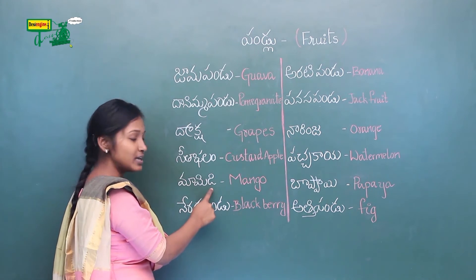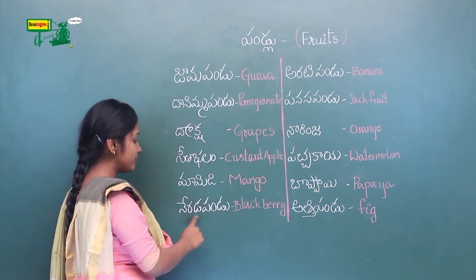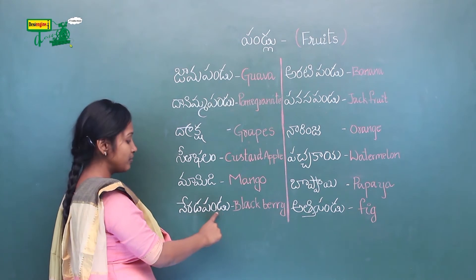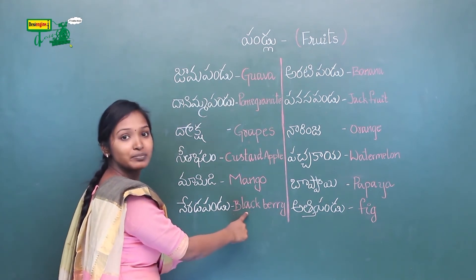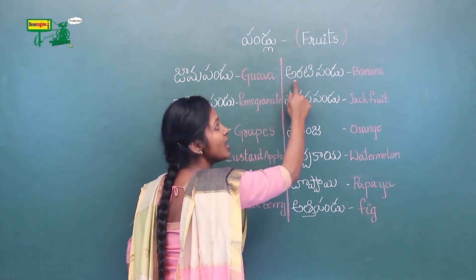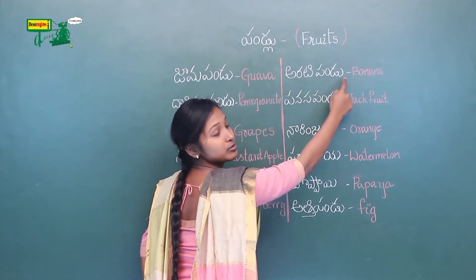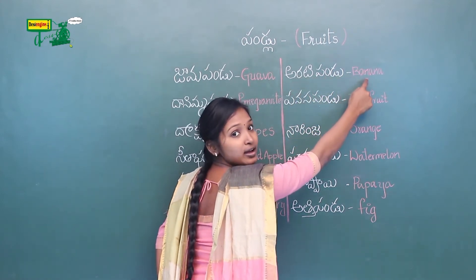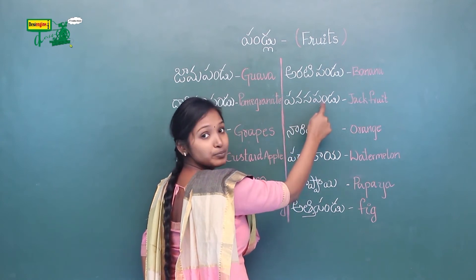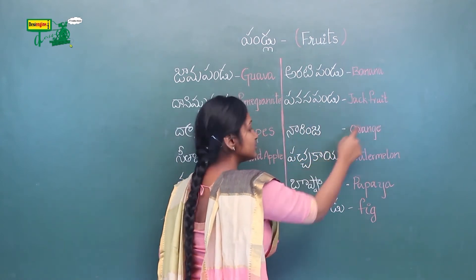Mamedi means Mango. Nereda Pandu means Blackberry. Arati Pandu means Banana. Panasa Pandu means Jackfruit.